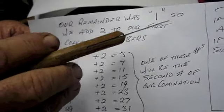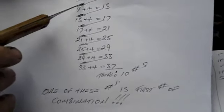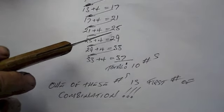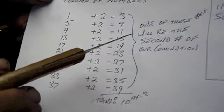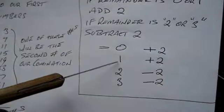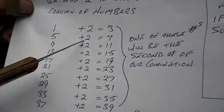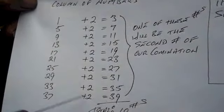So our remainder was one. So we add two to our first column of numbers. And there's our first column of numbers that we got after we added the four to the original number. Five, nine, thirteen, seventeen, twenty-one, twenty-five, et cetera. Here it is. One, five, nine, thirteen, seventeen, twenty-one, et cetera. Now, as I said, because our remainder was one, we refer to our code, a one. So we have to add two to it. So one plus two is three. Five plus two is seven. Nine plus two is eleven. Thirteen plus two is fifteen, et cetera.